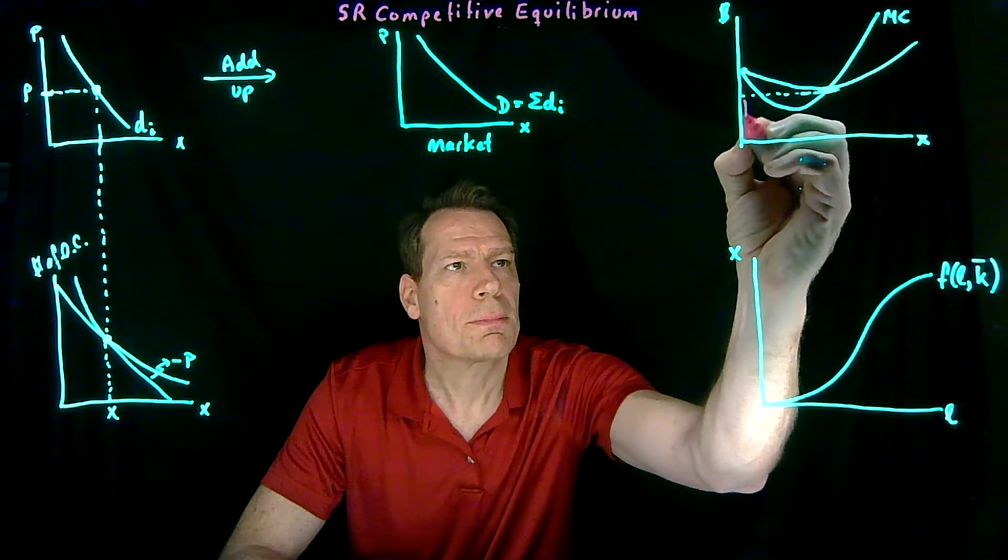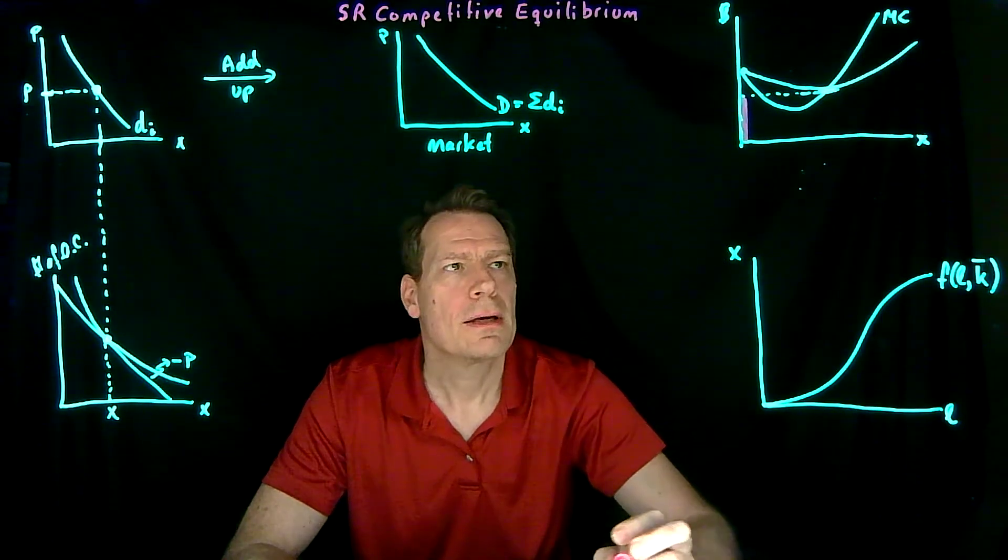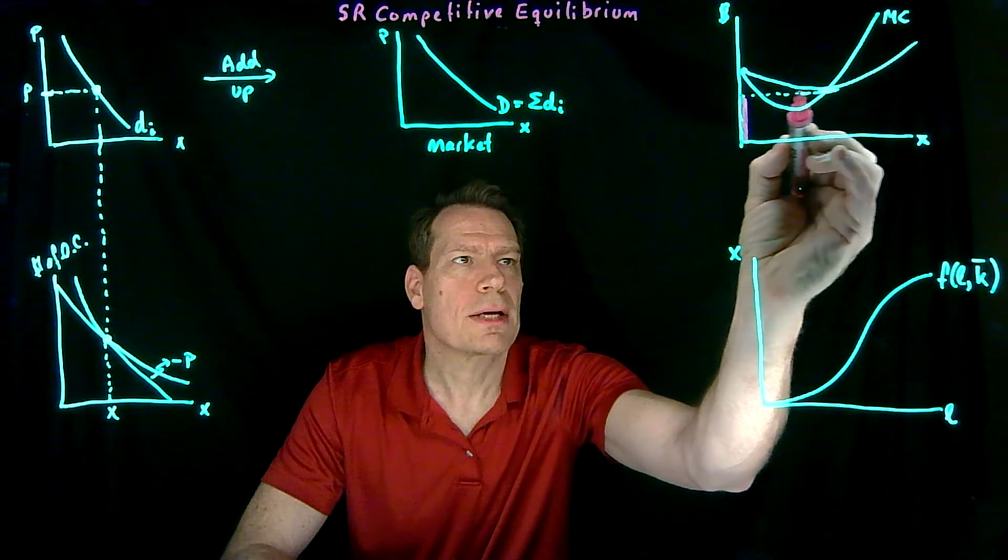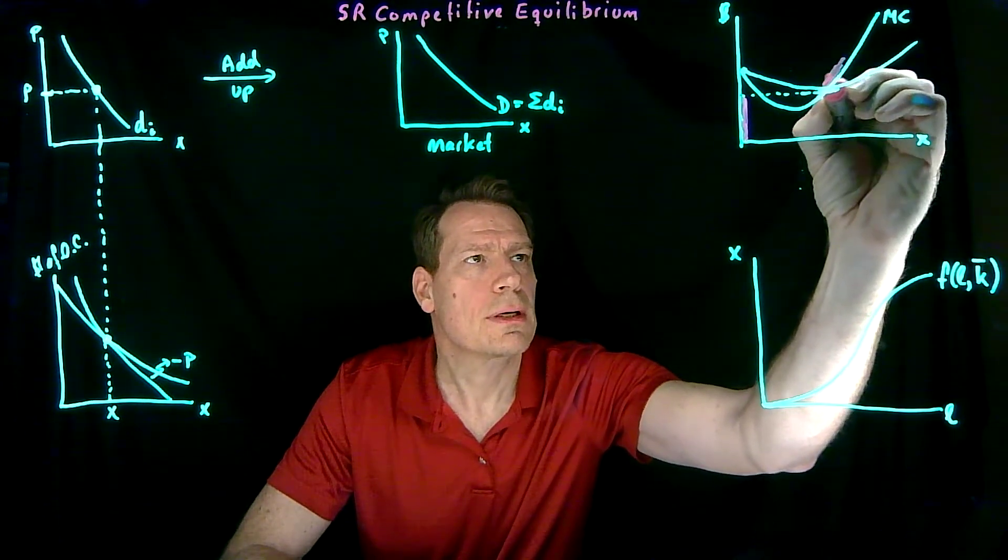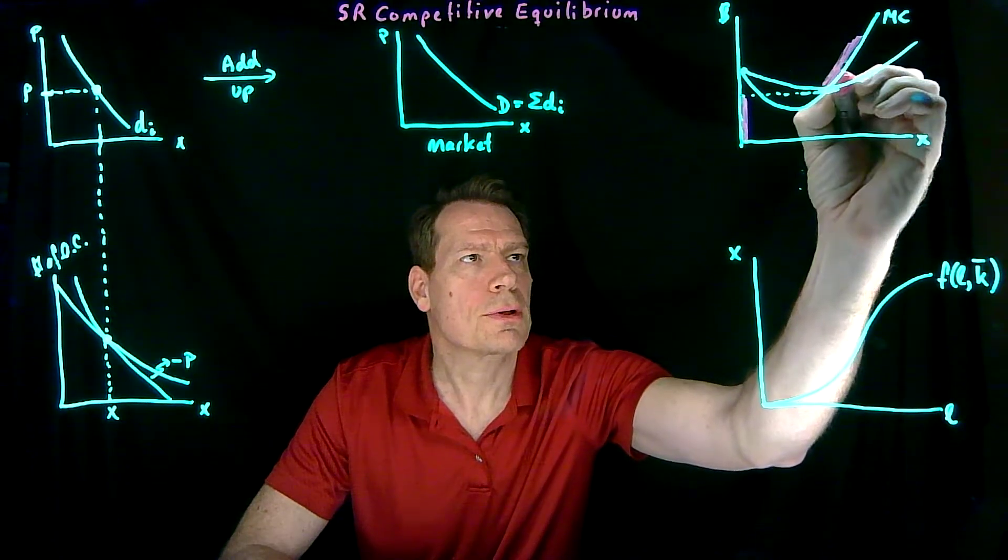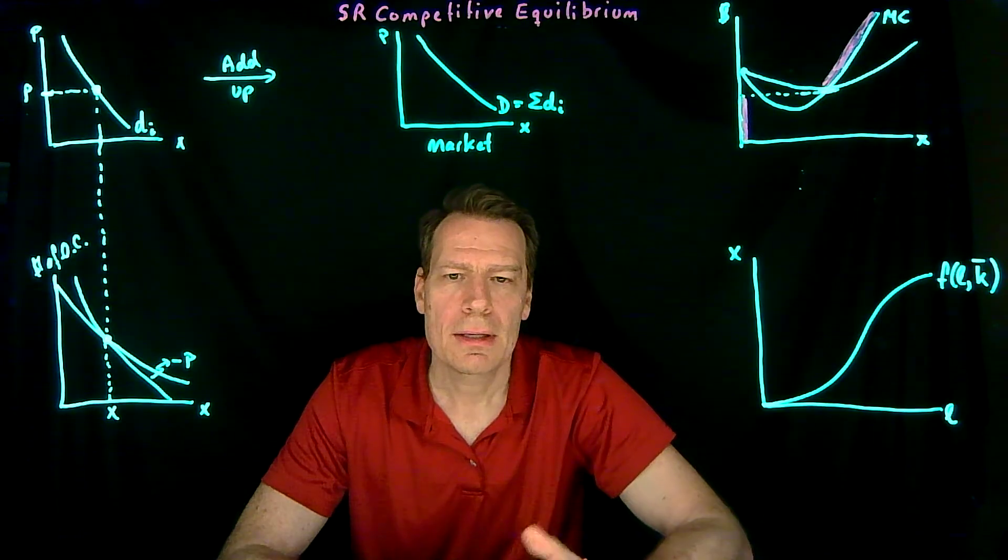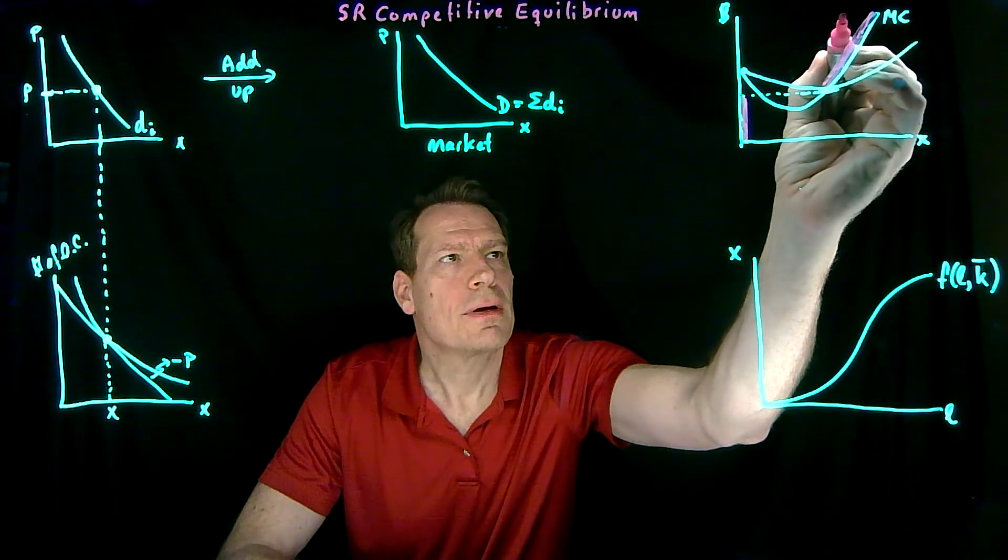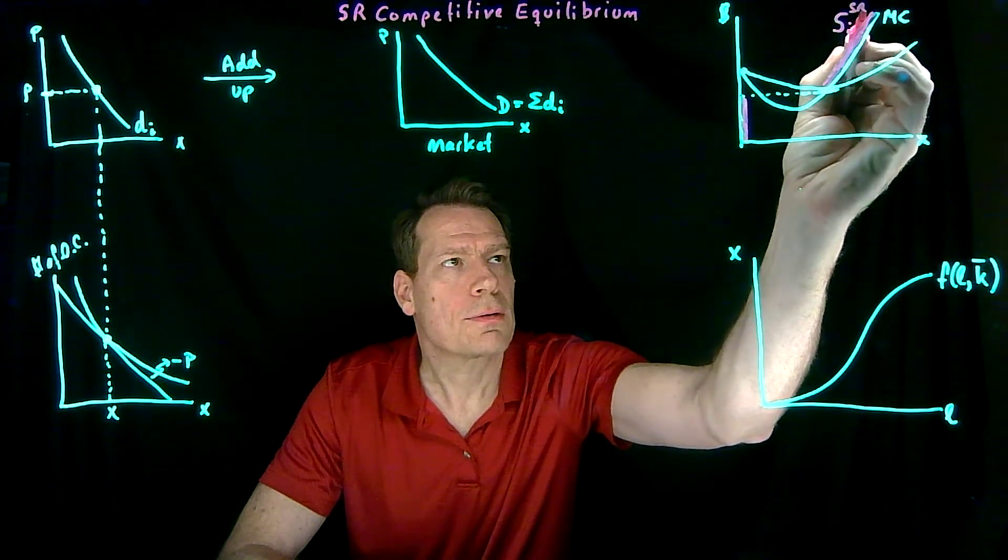So the firm supplies nothing if the price is below that shutdown price. But once the firm reaches, or once the price reaches this break-even price, the firm is going to start producing where price is equal to marginal cost. That was the second step of two-step profit maximization, set price equal to marginal cost. So now we have the individual firm's short run supply curve.